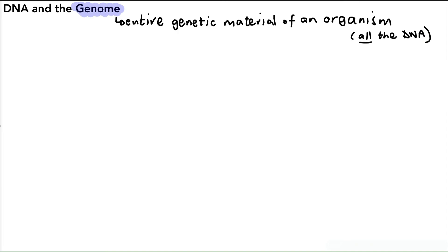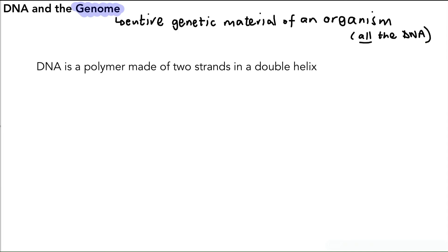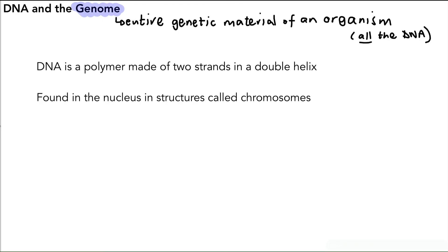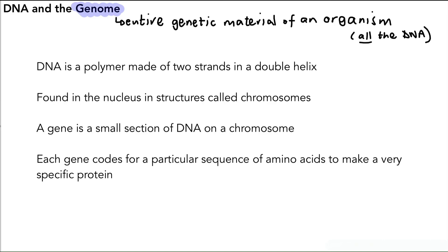To summarize: DNA is a polymer made of two strands in a double helix; it's found in the nucleus in structures called chromosomes; a gene is a small section of DNA on a chromosome; and each gene codes for a particular sequence of amino acids to make a very specific protein. That covers the key points of this video, and we'll use this as the basis for our protein synthesis video at the higher tier. Thank you for watching.